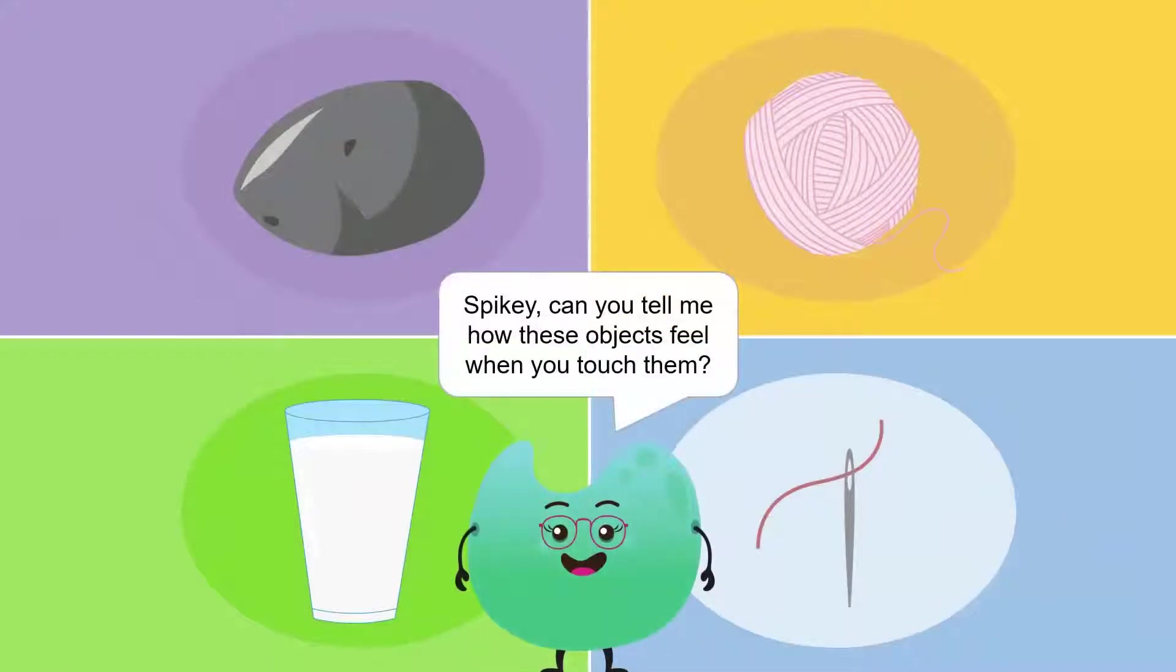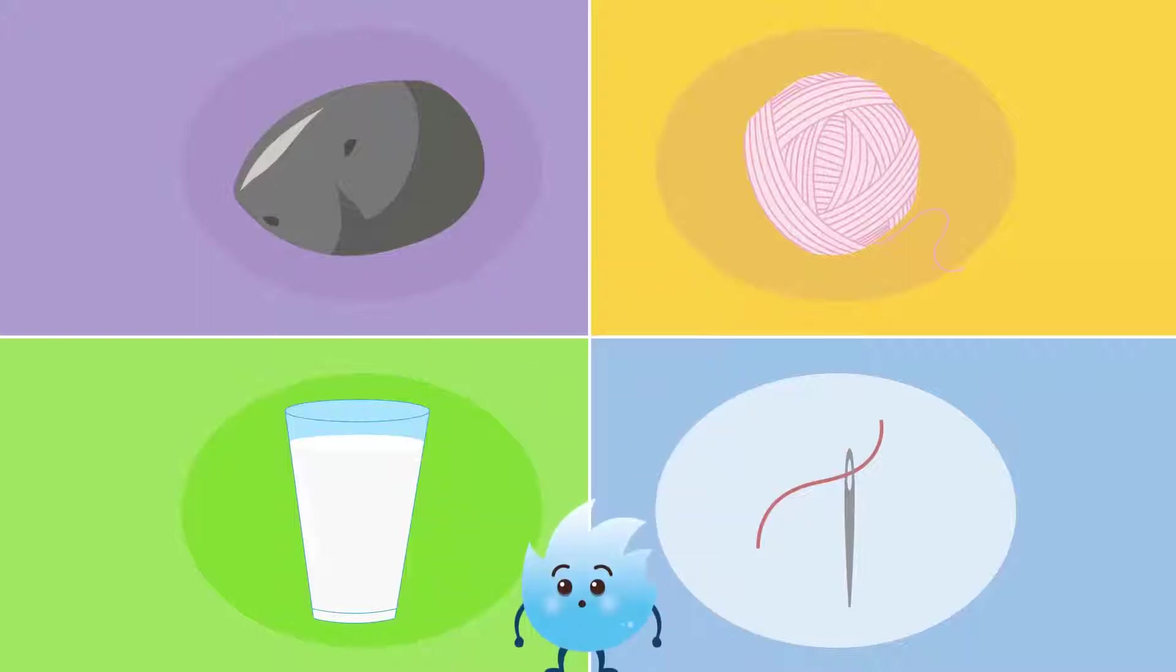Spikey, can you tell me how these objects feel when you touch them? This stone is hard and rough. This wool is soft and smooth. This glass of milk is warm. Ouch! The needle hurts. It has a sharp point at one end. Well done, Spikey.